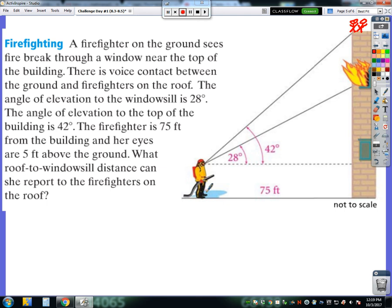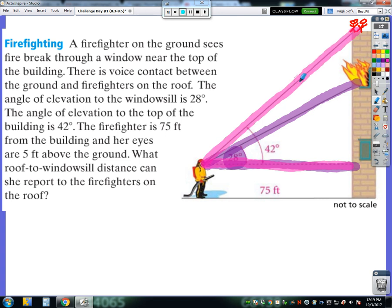The angle of elevation to the windowsill is 28 degrees. So really what they're saying is from the firefighter on the ground, when they look straight ahead at the building and then up, that's a 28 degree angle of elevation. The angle of elevation to the top of the building, when the firefighter looks straight ahead but then all the way up to the other firefighters at the top, that angle is this 42 degree angle of elevation.